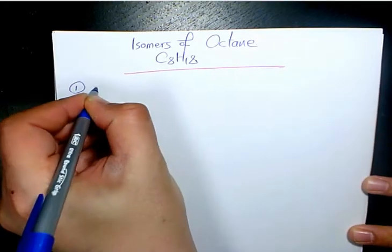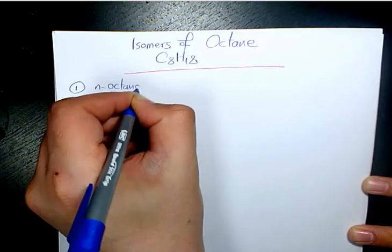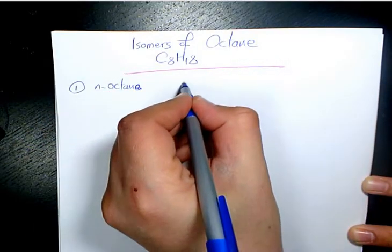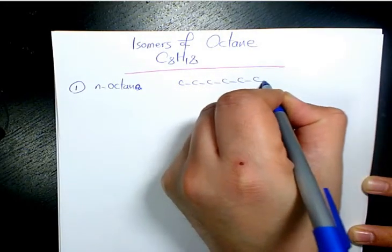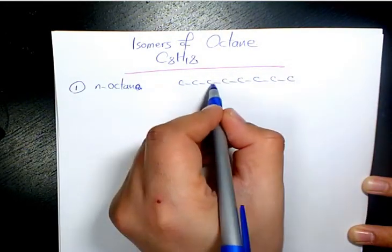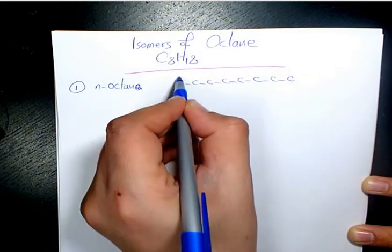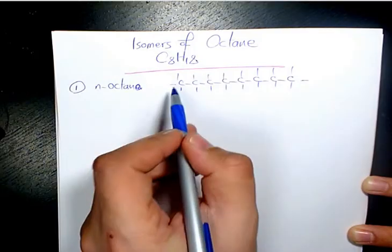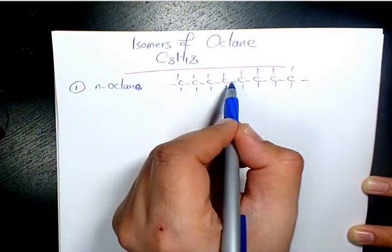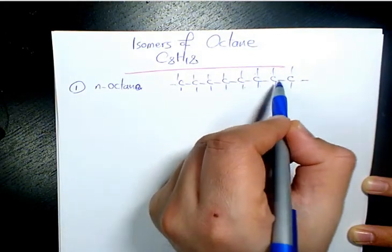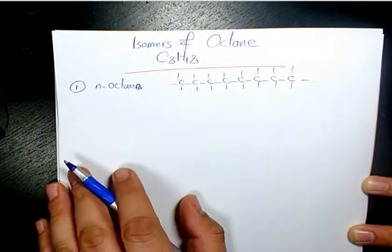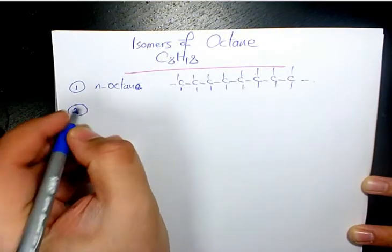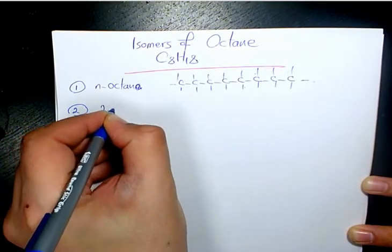The first one is going to be normal octane or N-octane. It's going to be 1, 2, 3, 4, 5, 6, 7, 8 carbons, all surrounded by hydrogen atoms — 18 total. There is no branch here, we have just a main chain.